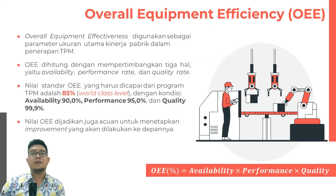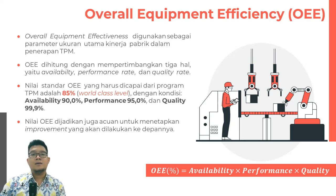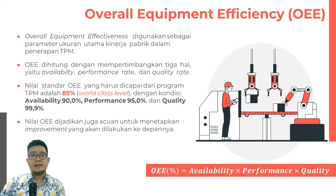OEE atau Overall Equipment Effectiveness digunakan sebagai parameter utama untuk pengukuran kinerja dari penerapan TPM dalam suatu industri. OEE dapat dihitung dengan mempertimbangkan tiga hal, yaitu Availability, Performance Rate, dan Quality Rate. Nilai standar dari OEE yang harus dicapai dalam program penerapan TPM ini adalah 85%, di mana angka 85% ini merupakan industri kelas dunia, dengan kondisi Availability memiliki nilai 90%, Performance Rate 95%, dan Quality Rate 99,9%. Nilai OEE ini juga dijadikan acuan untuk menetapkan perbaikan yang akan dilakukan ke depannya. OEE dalam persentase dapat kita hitung dengan mengalihkan nilai Availability dikalikan nilai Performance Rate dikalikan dengan nilai Quality.